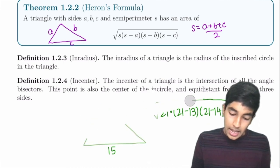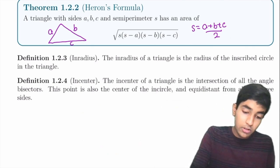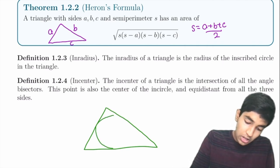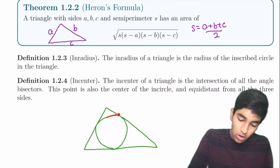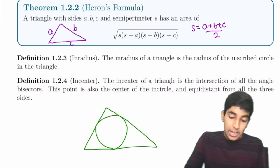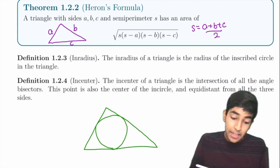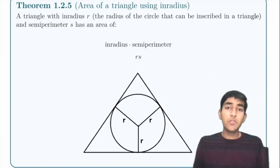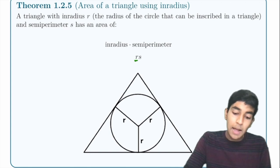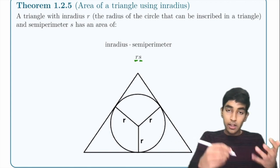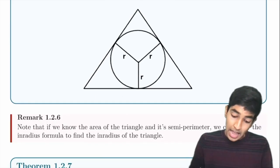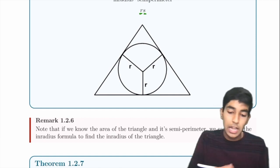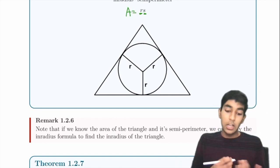The in-radius of a triangle is the radius of the inscribed circle — the circle that touches all three sides. The in-center is the center of this circle. The area of a triangle using the in-radius is r × s, where s is the semi-perimeter (half the sum of the three sides). If you know the area and semi-perimeter, you can find the in-radius: r = A / s.